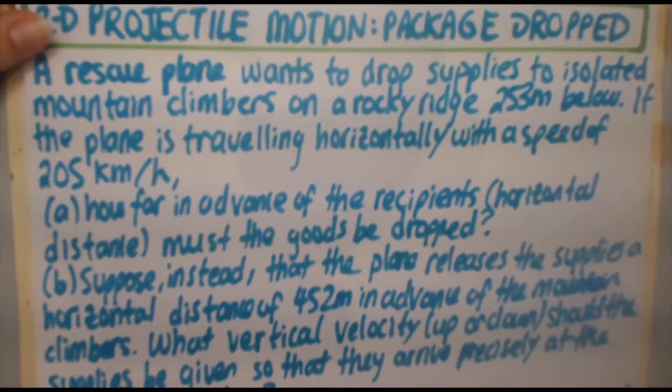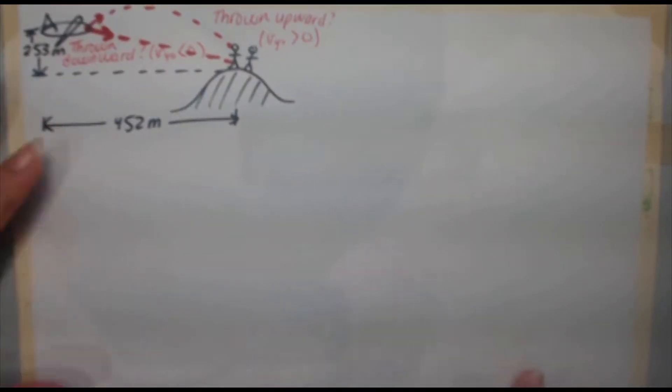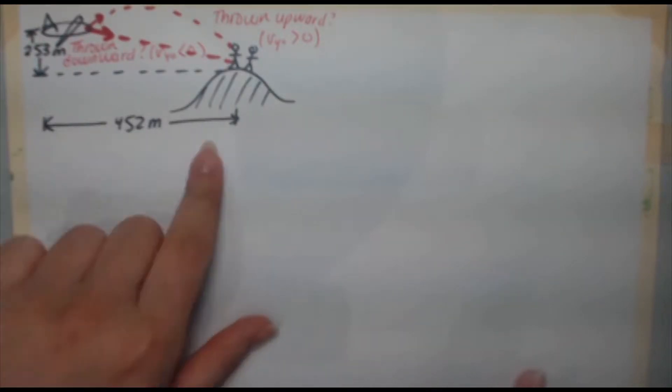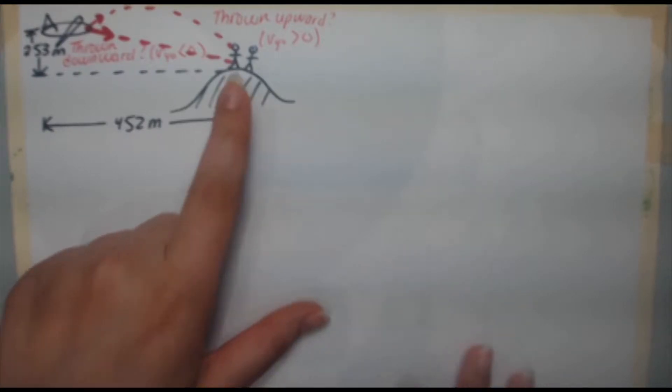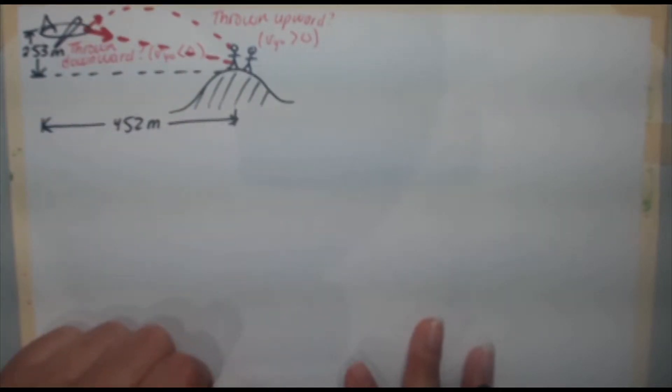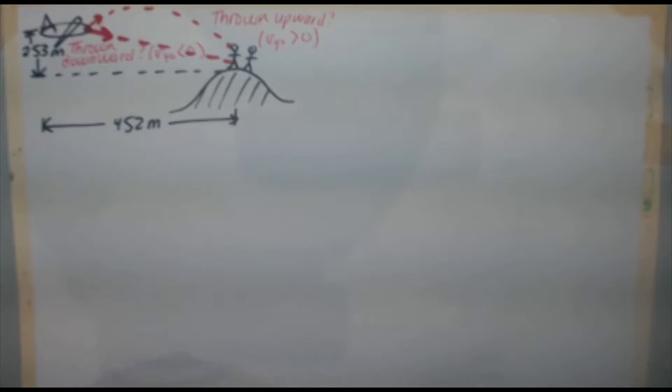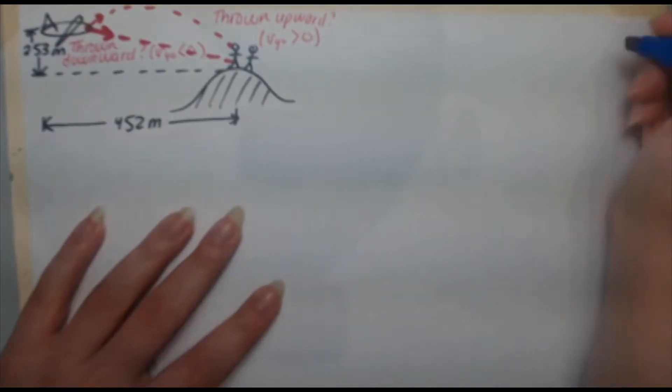Just as part A came with a diagram, part B also comes with a diagram. For this one, you've got your plane, it's the same 253 meters that the supplies need to drop. We're given the horizontal distance this time of 452 meters. We've got our people on the ridge. Now, what we don't know is whether the supplies need to go up or whether they need to be thrown down. That's going to be determined by the answer we get for V not Y.